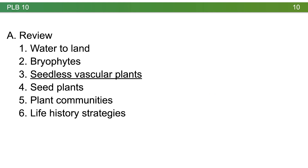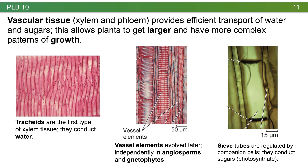Moving on to the first group of vascular plants — the seedless vascular plants. These plants have xylem and phloem for efficient transport of water and sugars, allowing them to grow much larger and develop more complex branching patterns — a dominant branching sporophyte. They have tracheids to conduct water; some species (angiosperms and some gnetophytes) also have vessel elements. Sieve tubes transport sugar and have companion cells because they lack organelles.